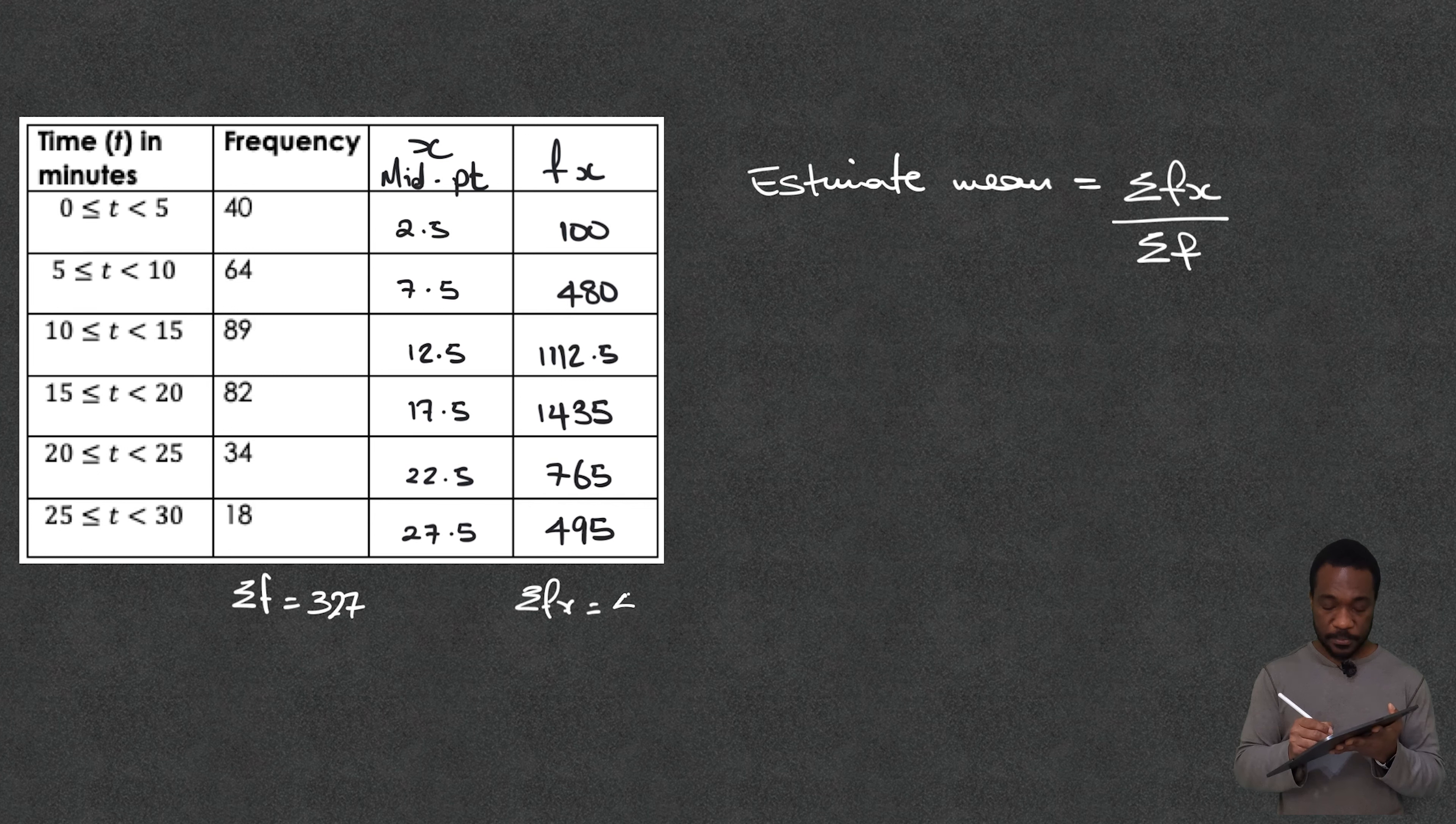That's going to give us 4,387.5 and now we've got that we can say therefore the mean or the estimated mean is going to be equal to 4,387.5 divided by 327.